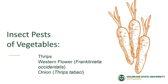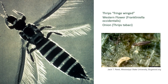Insect pests of vegetable gardens: Thrips. Thrips are fringe-winged insects and we have two types that are the most problematic in our vegetable gardens: the western flower thrips and the onion thrips. You can see here in the picture on the left why this is called a fringe-winged insect. They're very tiny, but when they're adults and their wings are unfurled, you can see that it has these hair-like filaments coming off of the wings, sort of like a fringe — and it is rather attractive, but the damage they do to our garden is not fun at all.